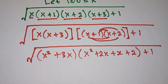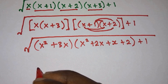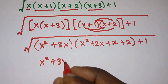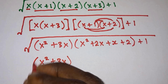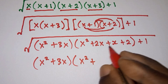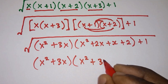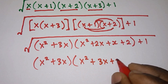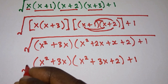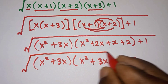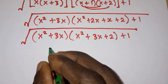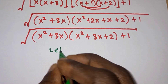So from here we're going to have x squared plus 3x, times x squared plus 3x plus 2, then plus 1. The square root is still there waiting for us.